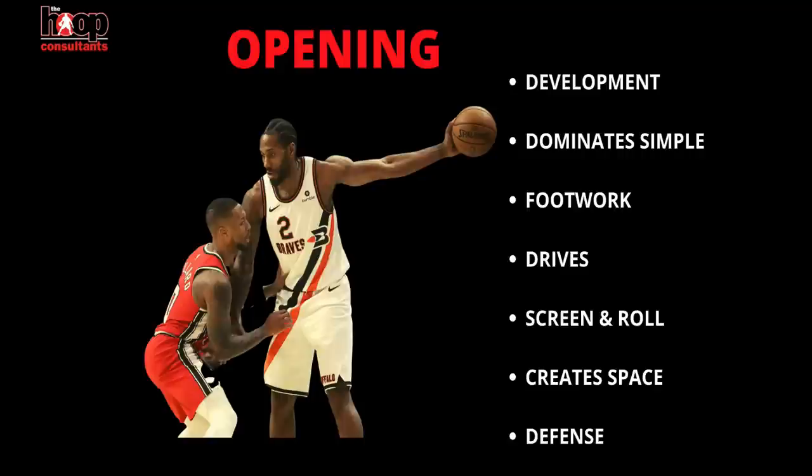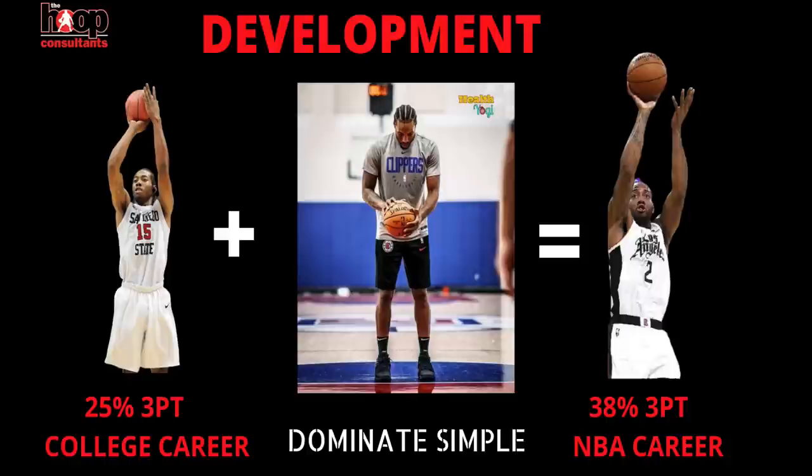Here are the topics we'll be discussing. First, the development of Kawhi's shot from an inconsistent shooter as a sophomore at San Diego State to just seven months later as a rookie with the Spurs with a totally revamped shot. Then his offensive footwork from the perimeter — catch and shoot, catch and drive, and mid-range pull-ups. His straight line drive game, screen and rolls, iso game with revamped ball handling, his post-up game out of MJ and Kobe's book, and finally his defense.